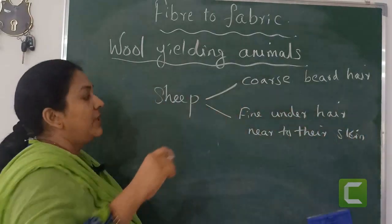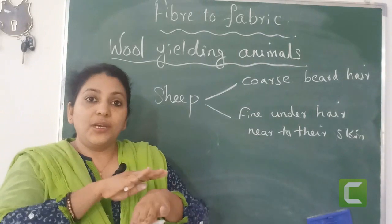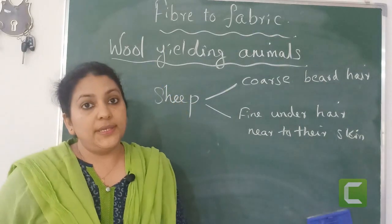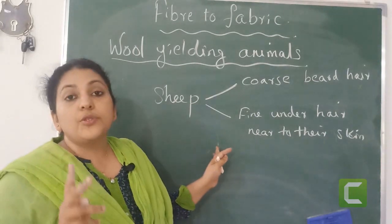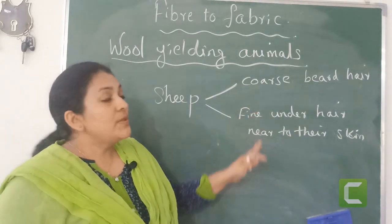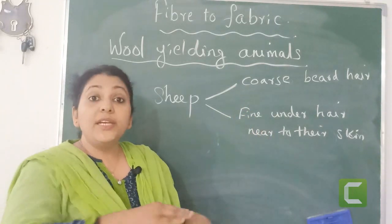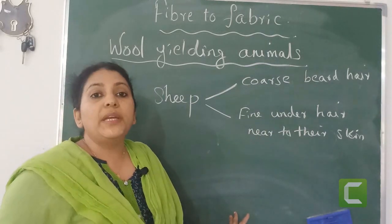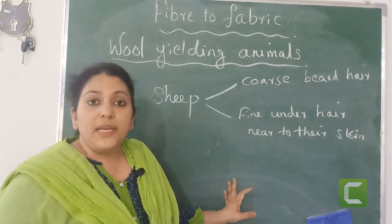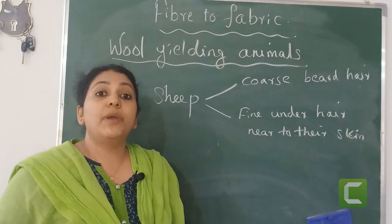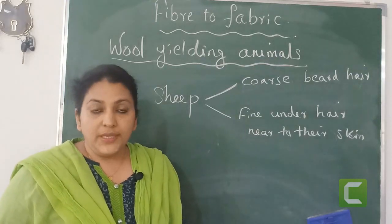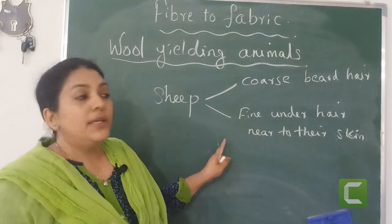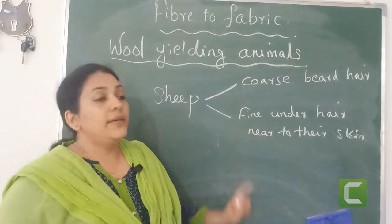In a sheep's body, two different types of fur are found — one is coarse, hard beard hair, and also fine or very smooth under hair which is near to their skin. In our body also, if you touch the hair on our hand or arm, it is soft compared to the hair on our head. Same way, in a sheep's body there are two different types of fur — one is coarse beard hair, and the other one is fine under hair near to their skin.